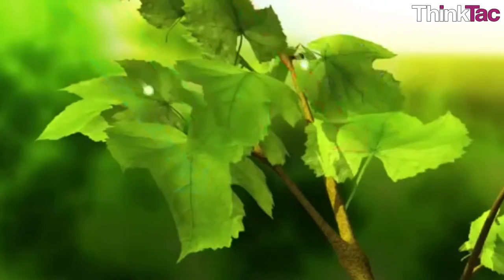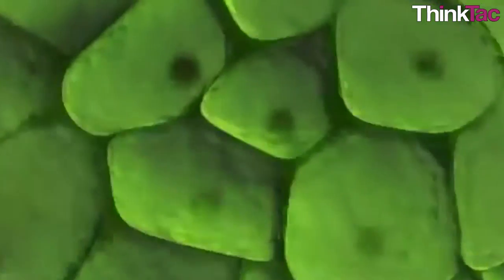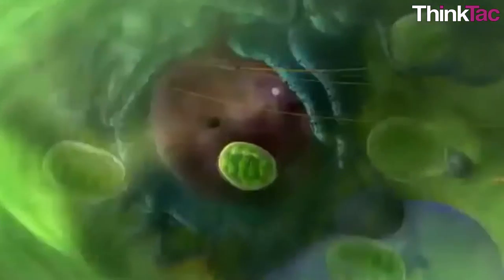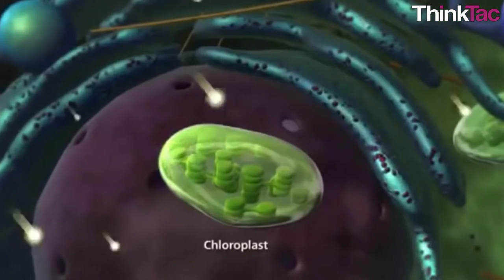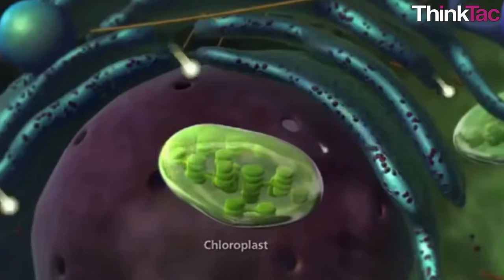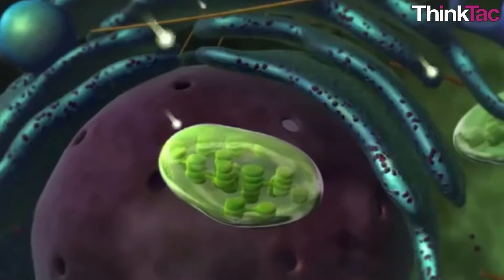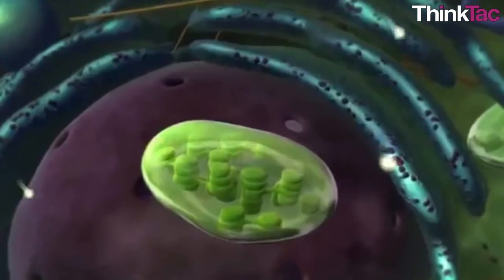Instead, these excited chlorophyll molecules transfer the energy to the chloroplasts to initiate the chemical reactions involved in the photosynthesis. Hence, the chloroplasts trap the light energy. Now you might want to know about how this happens. We will discuss this in brief.